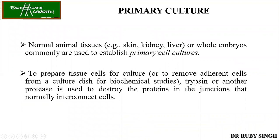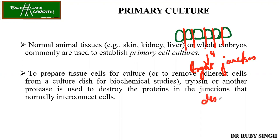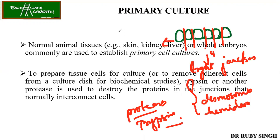Primary culture can be from any animal tissue — skin, kidney, liver — or you can take the whole embryo. To prepare tissues for culture you need trypsin and proteases to destroy the proteins in the junctions that normally interconnect the cells. Inside the tissue, cells are attached to each other via tight junctions, desmosomes, and hemidesmosomes. All these need to be broken down using proteases or trypsin, along with homogenization, to convert your tissue into a cell suspension.